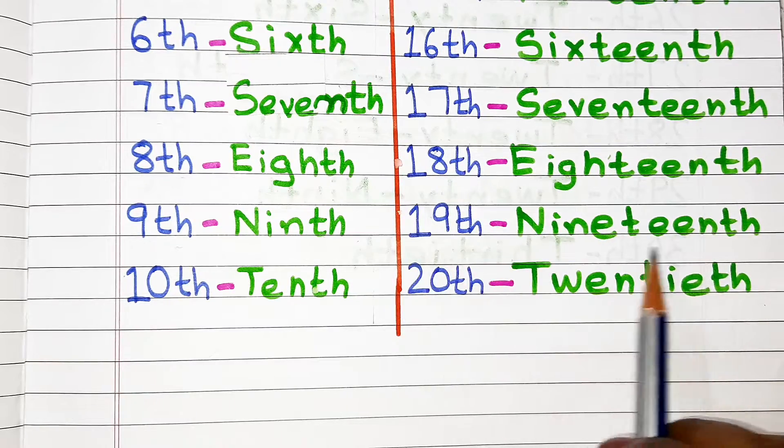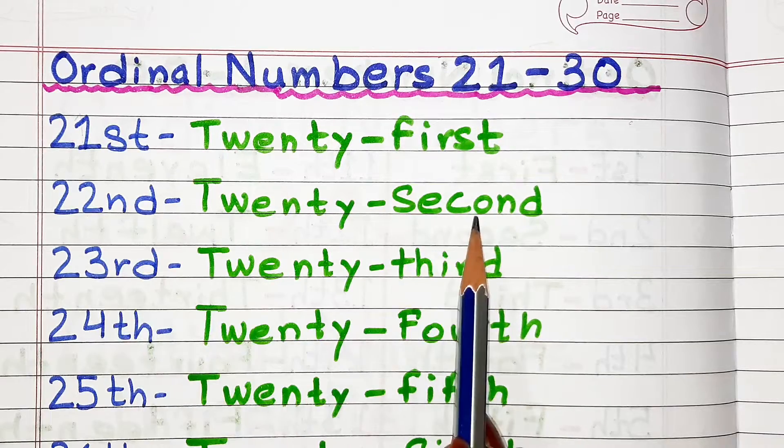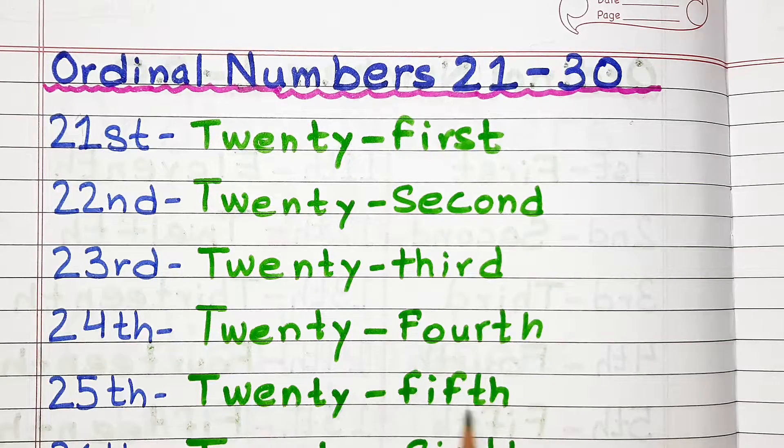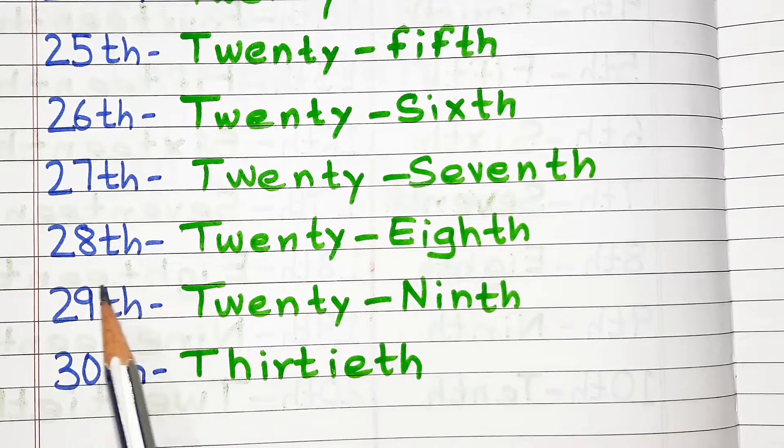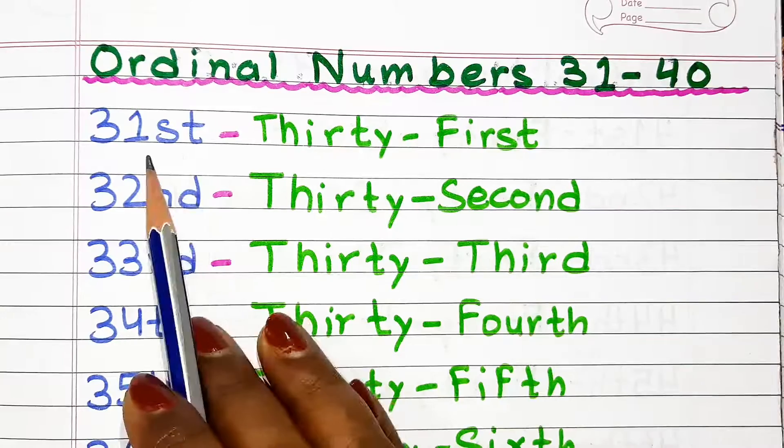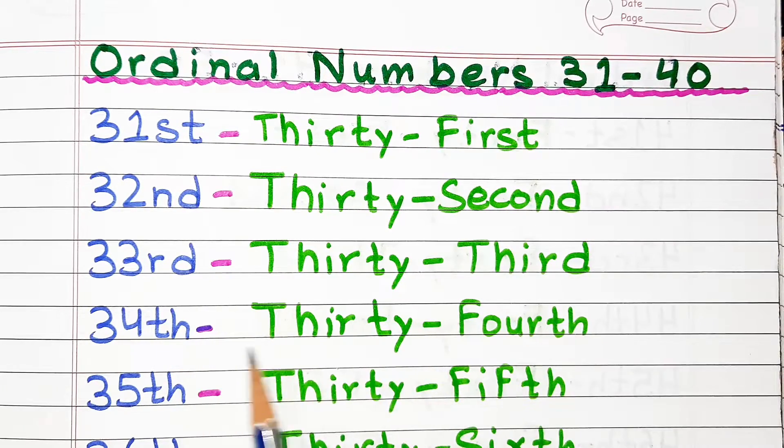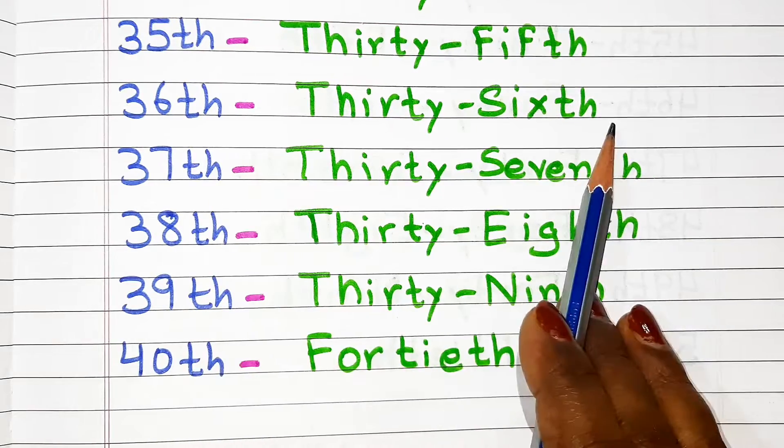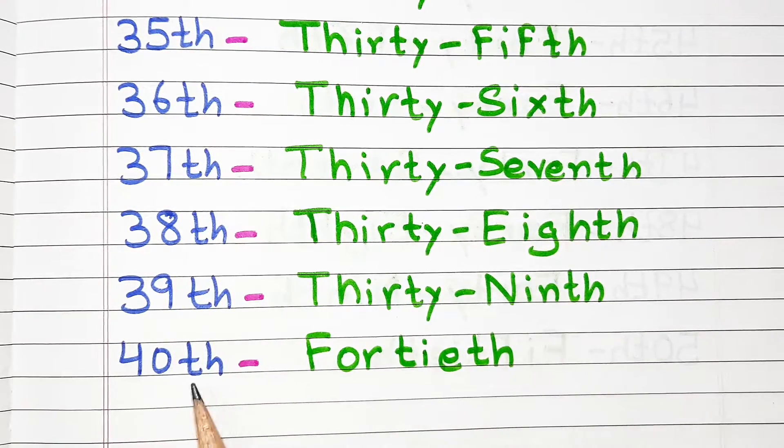Twenty-first, twenty-second, twenty-third, twenty-fourth, twenty-fifth, twenty-sixth, twenty-seventh, twenty-eighth, twenty-ninth, thirtieth, thirty-first, thirty-second, thirty-third, thirty-fourth, forty-fifth, forty-sixth, forty-seventh, forty-eighth.